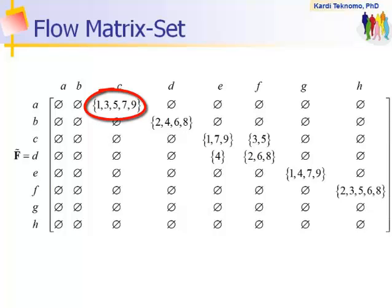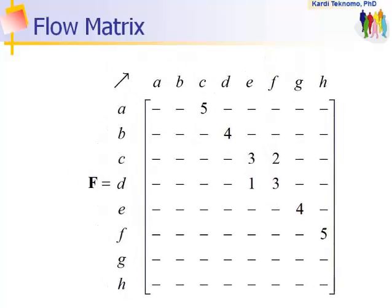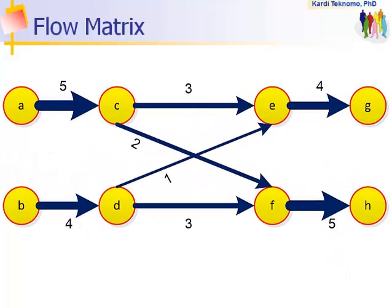Counting the number of elements of the flow matrix set will produce flow matrix. For instance, link AC has element of a set of 1, 3, 5, 7, and 9. Then, this set has 5 elements. Thus, we put 5 in the flow matrix from A to C. Showing the flow matrix back into a weighted graph will give us visualization on the actual flow that utilizes the network.